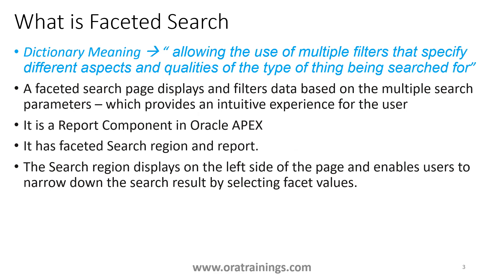As per the dictionary meaning, faceted search allows a page to provide a different set of search criteria for a user to get results. If you observe the Amazon website on the left side, you'll get a large number of search functionalities like less than, greater than, range, amount, product, company — these different sets of search functionalities provided on a page is what faceted search is called.